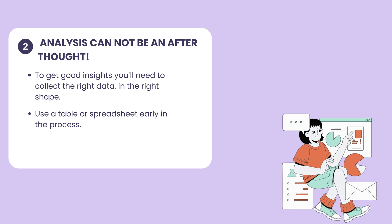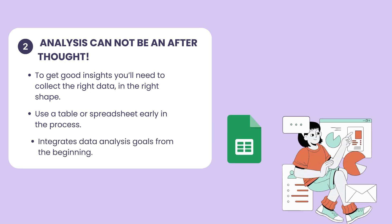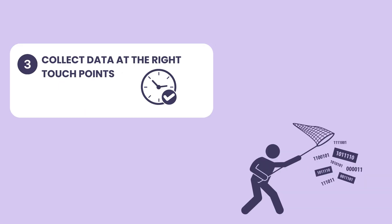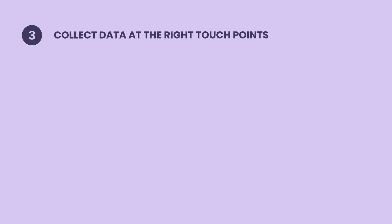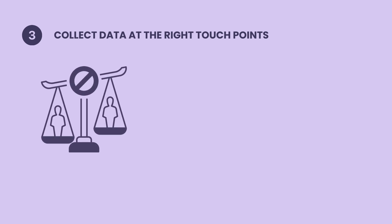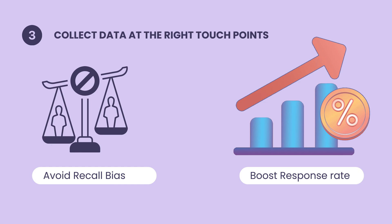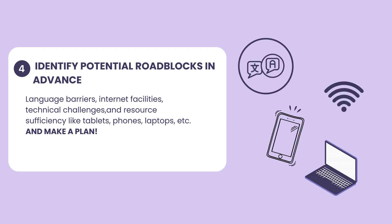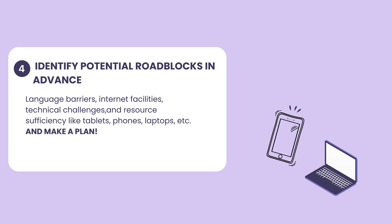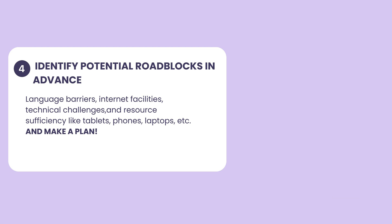Organizing your data in a structured format, like a spreadsheet, can facilitate easier analysis and visualization. Third, plan to collect data at the right touch points — timing is everything. Collecting data at appropriate intervals before, during, and after an intervention can provide more accurate and relevant insights. Collecting feedback right after training reduces recall bias and captures experiences more accurately. Fourth, identify potential roadblocks in advance. Anticipating challenges is key to smooth data collection. Consider logistical issues like language barriers, internet access, and the technological capabilities of your respondents. Planning for these factors in advance — such as choosing survey tools offering offline data collection or multilingual support — can prevent obstacles hindering response rates or data quality.